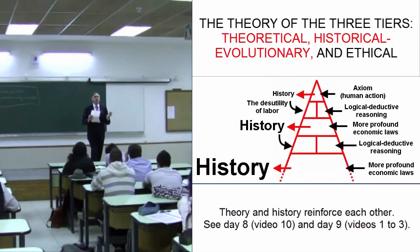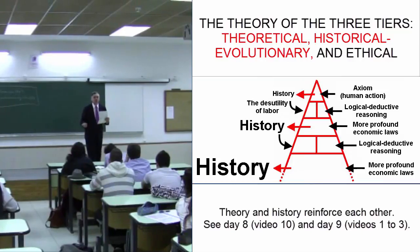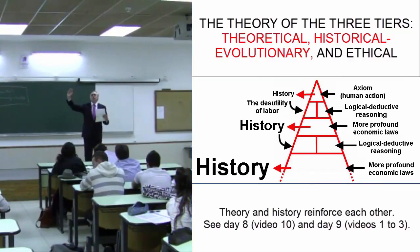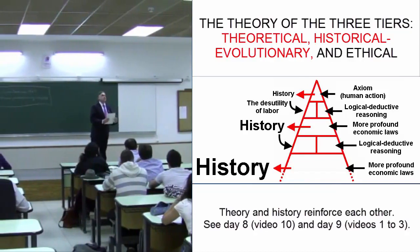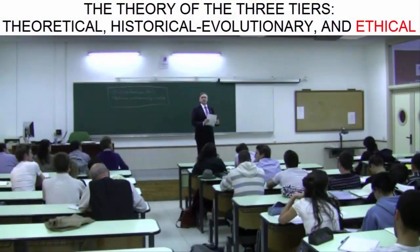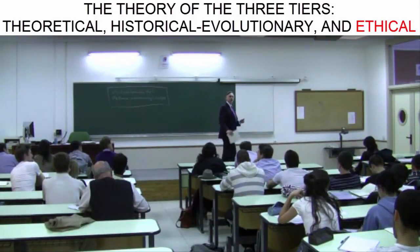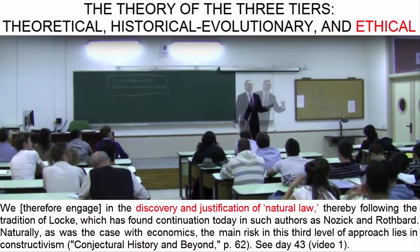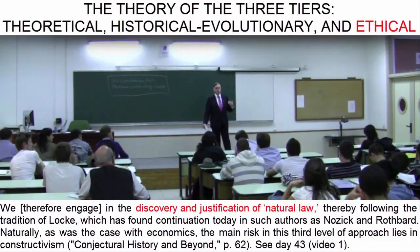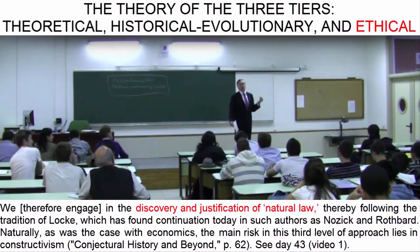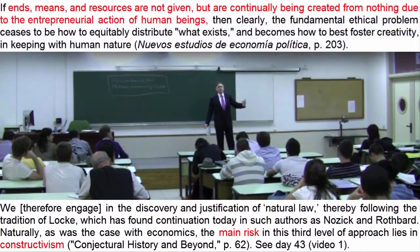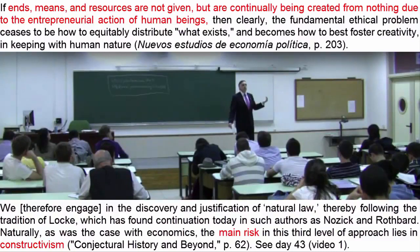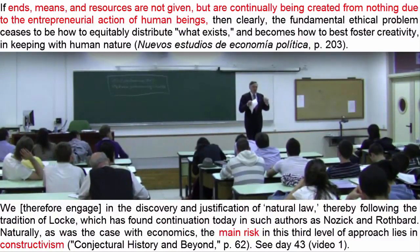If I want to build an absurd economic science in a vacuum, history will bring me back to reality, so I can focus my theory on something relevant. By the same token, if I want to trust history alone and I am mistaken in my interpretations, I have theory to help me correctly interpret historical events. However, we also need the third tier, or level of approach, which deals with what is ethical, what is just and unjust, what is right and wrong, what is in accordance with human nature, and what contradicts human nature. Of course, I can also develop an absurd ethics in a vacuum, unconnected with reality, but history and theory will help me to better focus it, and to know with relative certainty whether I am on the right track or the wrong one.